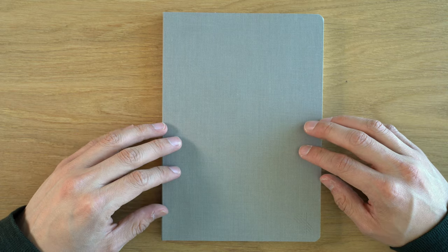This has Tomoe River 52 GSM paper, the white version. Misubi bought a large quantity of that old 52 GSM Tomoe River paper. For those of you that don't know, they changed the place where they manufacture it, or maybe they're using a different machine now.